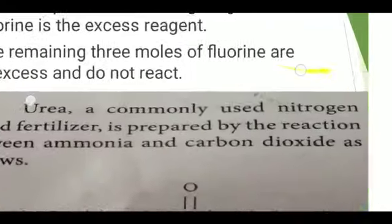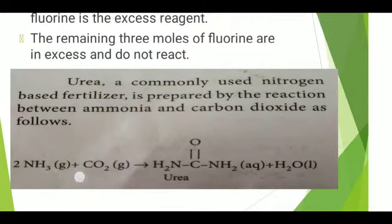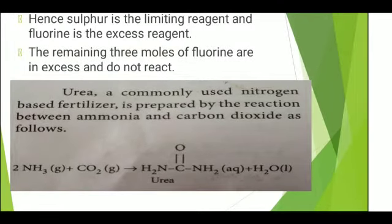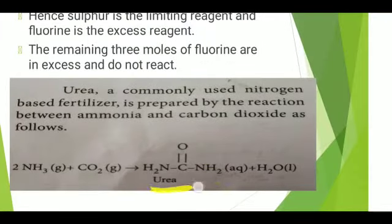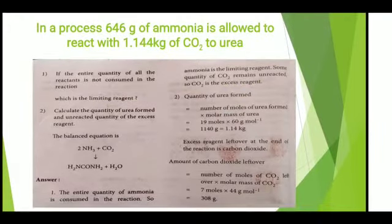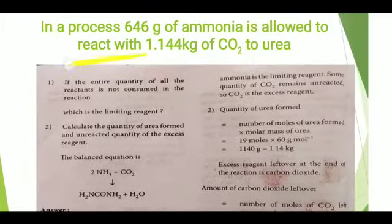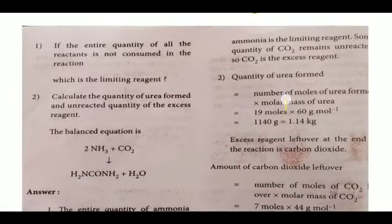Now we are going to calculate the limiting reagent using the preparation of urea as an example. Urea, a commonly used nitrogen-based fertilizer, is prepared by the reaction between ammonia and carbon dioxide: 2NH₃ + CO₂ → NH₂CONH₂ + H₂O. In this process, 646 grams of ammonia is allowed to react with 1.144 kg of CO₂ to form urea. Notice that ammonia is given in grams and carbon dioxide in kilograms, so we must convert kg to grams.